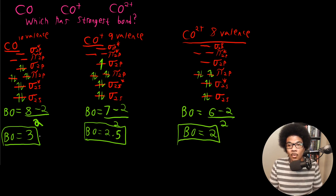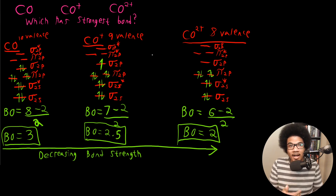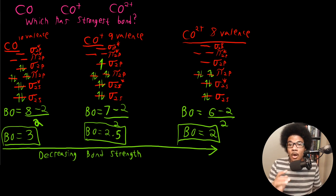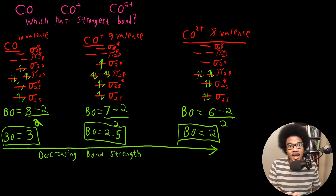Ranking these in order of decreasing bond strength: CO has bond order 3, CO+ has 2.5, and CO2+ has 2. Bond strength decreases as we remove electrons because those electrons are being taken from bonding molecular orbitals, weakening the bond. Hopefully this gives good insight into how to deal with heteronuclear diatomics. It's important to know what happens in the heteronuclear case, not just the homonuclear case.